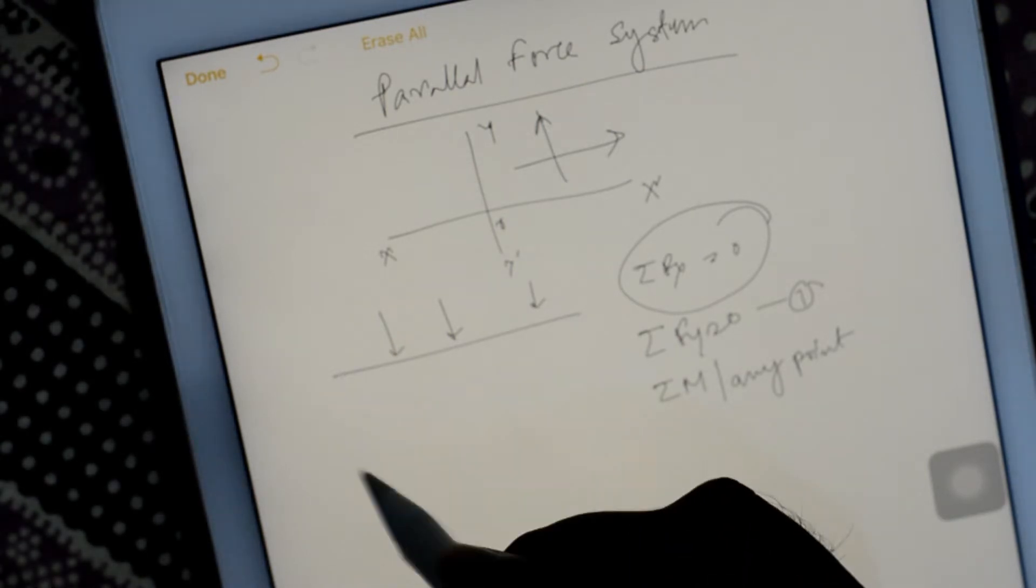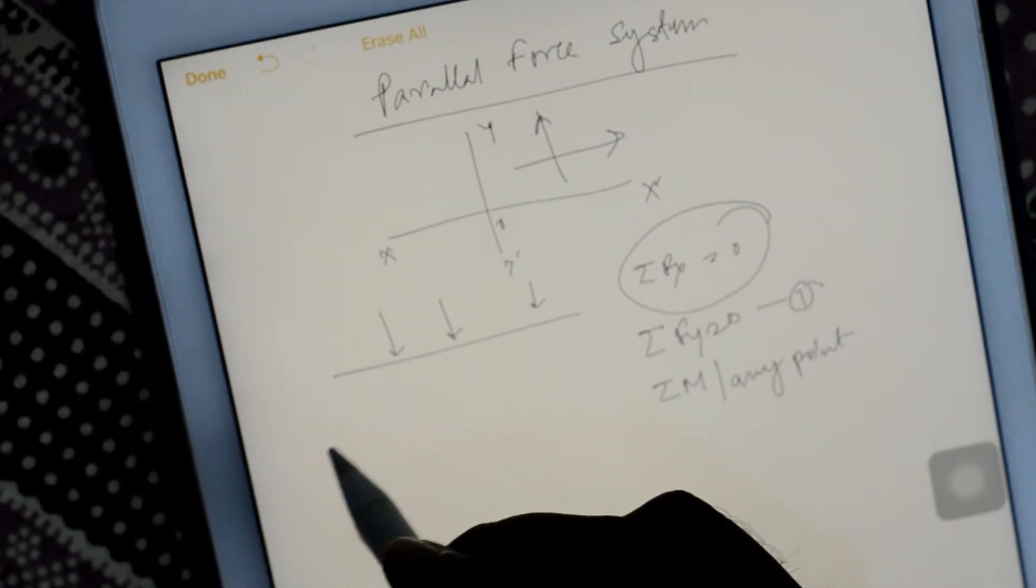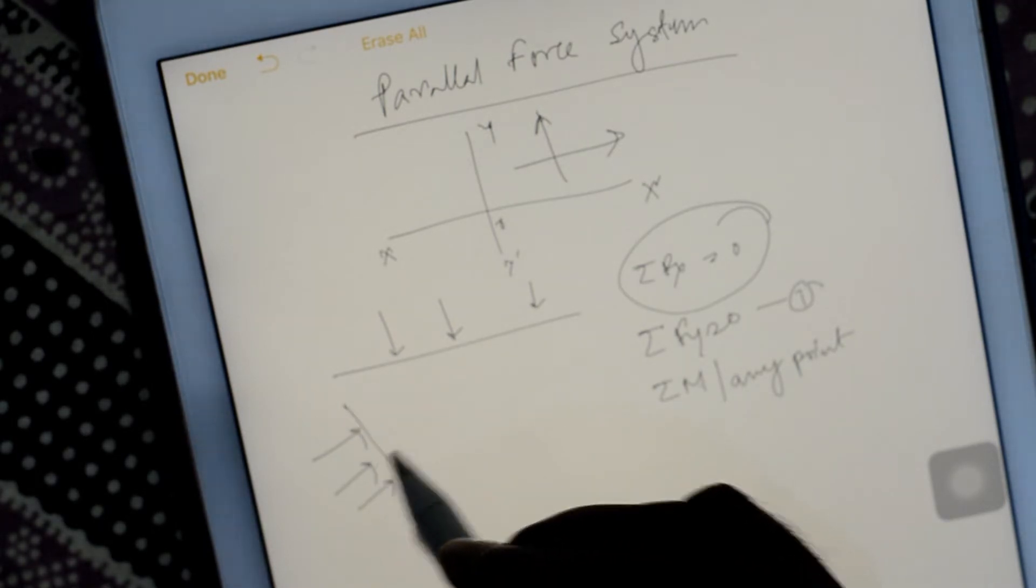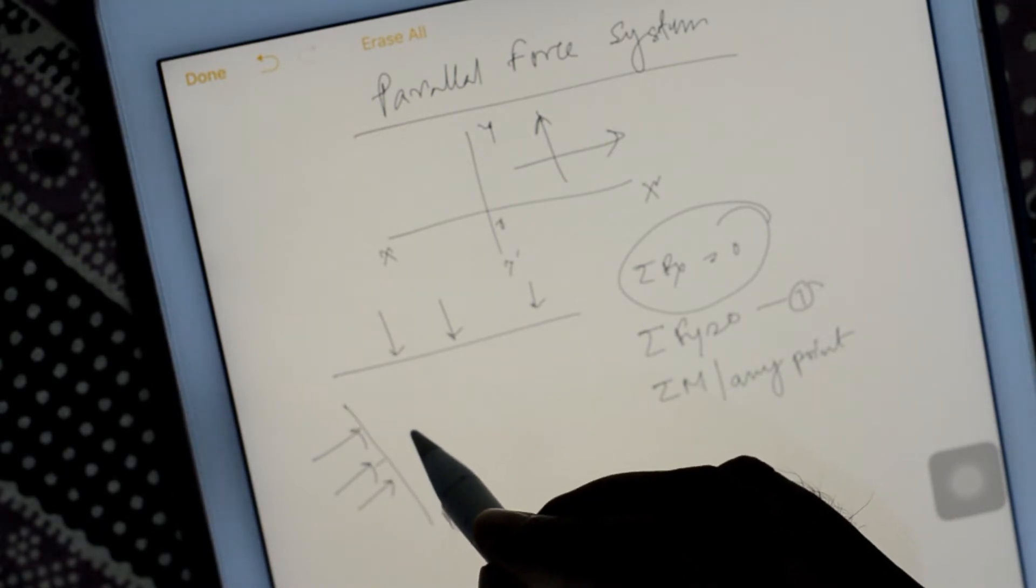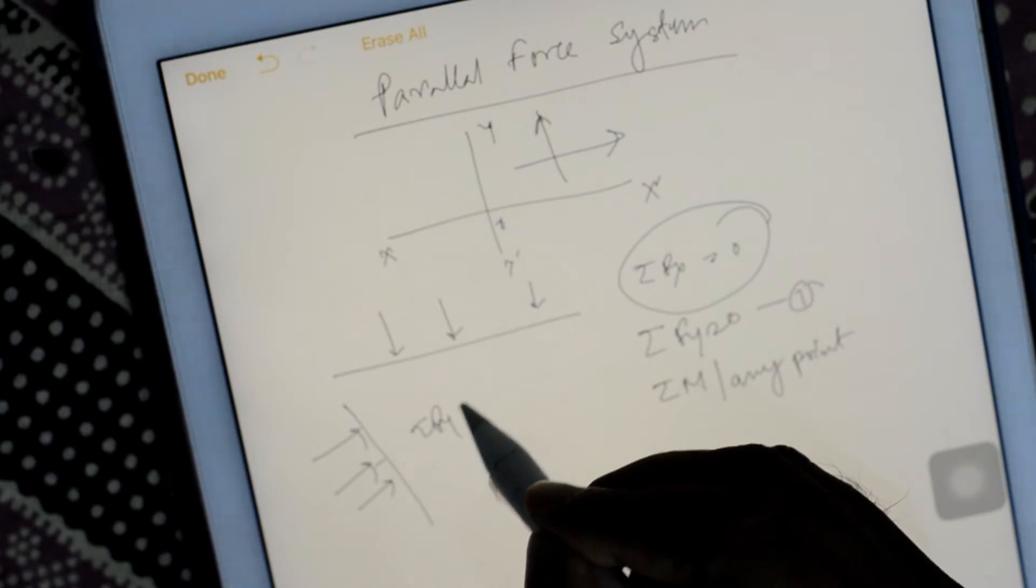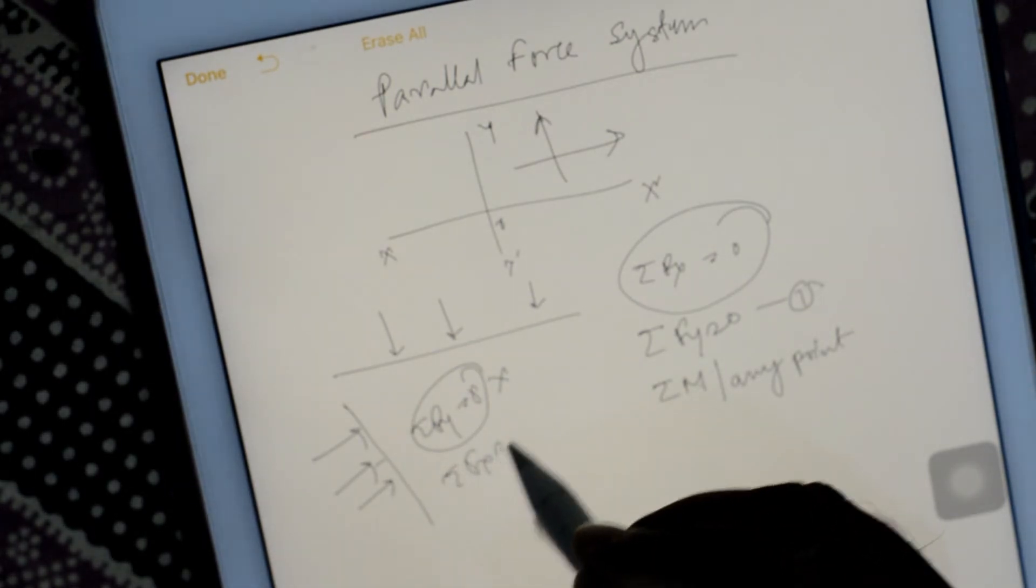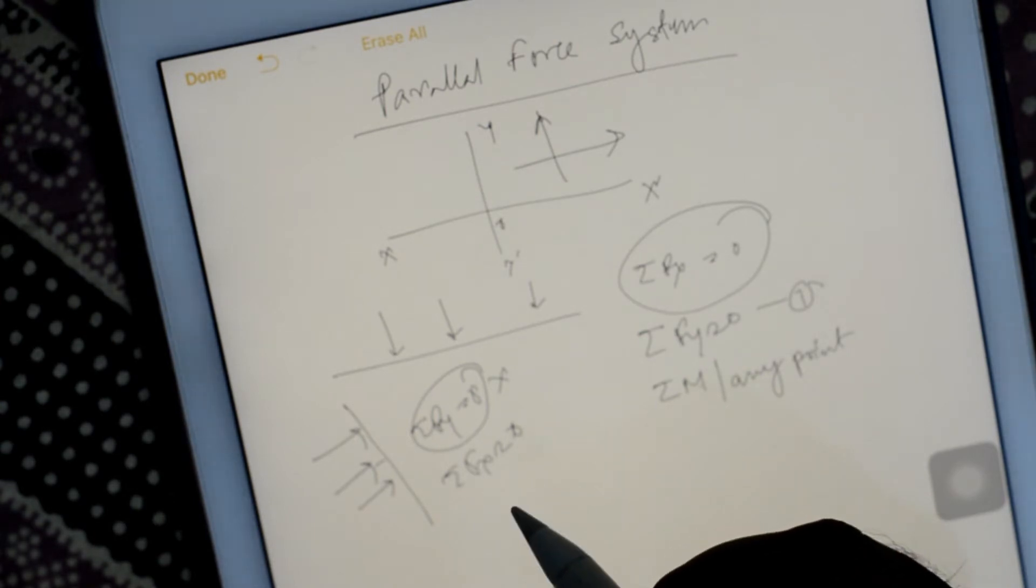And now suppose forces are acting that kind of side. So in that case summation f y is not required. Summation f x equal to 0. So from this you find the reaction.